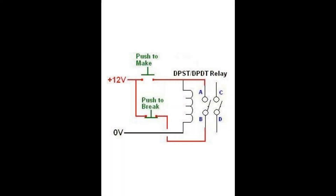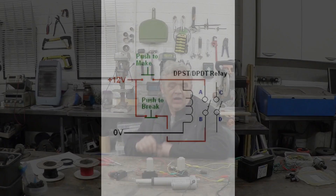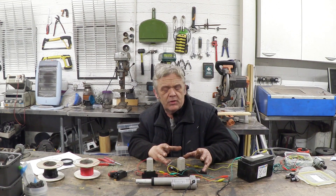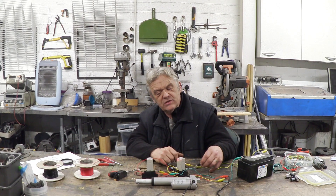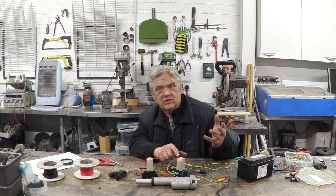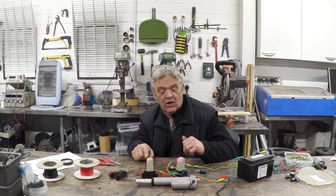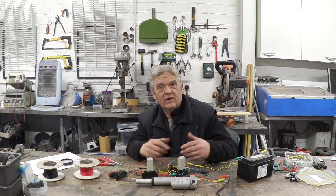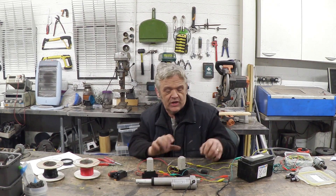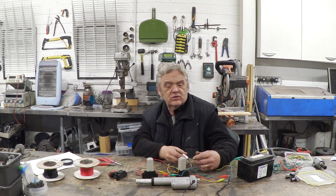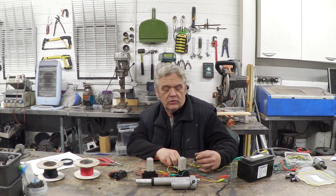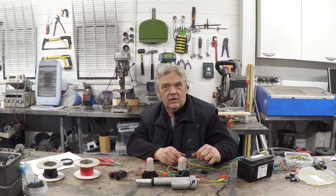A latching circuit using a relay looks like this, and this is an implementation of it. On this I have two switches. If I press this switch, that relay operates and even though I release the switch it stays on — it's latched in the on position. Until I press my off switch, when the relay switches off and stays off. So these two switches operate this in a latching mode: it will latch on and it will latch off.